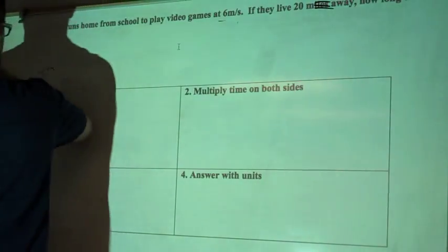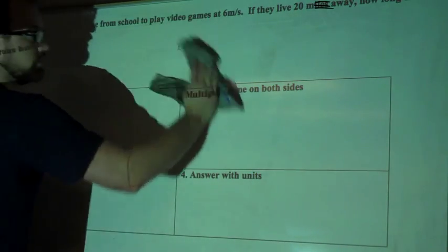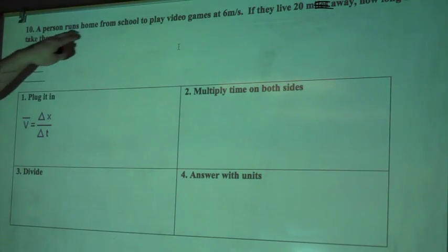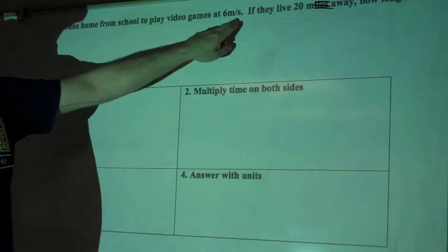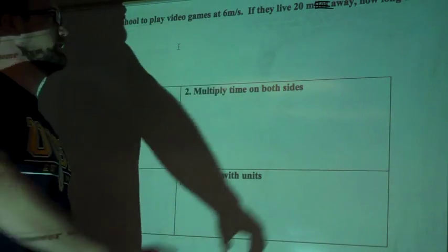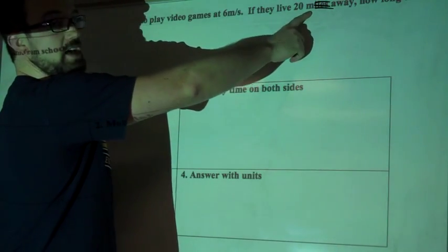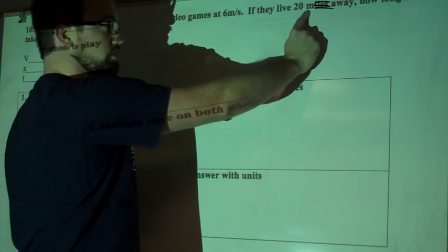Number 10, there's a correction that I want you to make on it really quick. So first, a person runs home from school to play video games at 6 meters per second. Good. If they live 20, I crossed out everything, just left the M for meters. If they live 20 meters away,